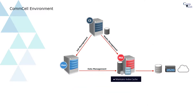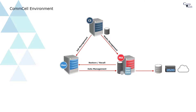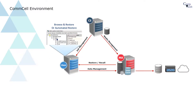By default, the Index Cache is stored on the Media Agent and is recommended to be stored on dedicated disks. The major function of the Index Cache is to provide quick access to indexed data on the media during a browse or a restore operation.